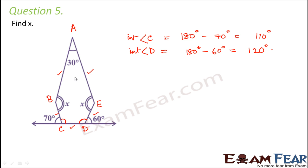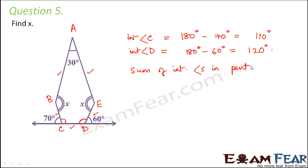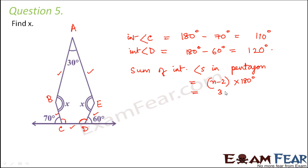So now let us look at this pentagon — this is a pentagon. What would be the sum of interior angles in a pentagon? That would be equal to (n − 2) × 180 degrees. The value of n here is 5, so 5 minus 2 is 3 into 180 degrees, which is equal to 540 degrees.